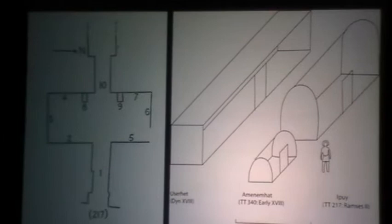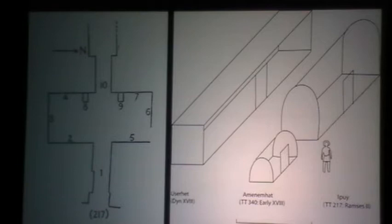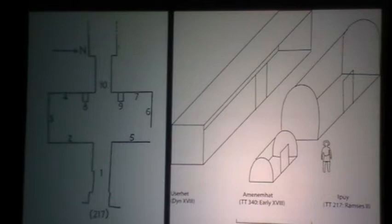Ipu could also have worked on depictions on pieces of cultic furniture and other items, as well as producing three-dimensional renderings and statuary. His tomb chapel is relatively large for Deir al-Medina, where some chapels, such as Theban Tomb 340 discussed earlier today, were quite tiny. But Ipu's chapel, if compared to even middling-status elite chapels at Thebes, is still actually relatively small.